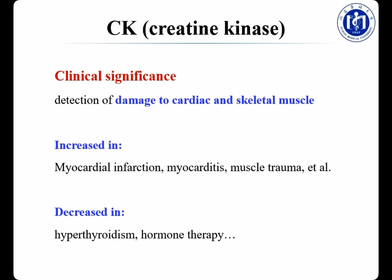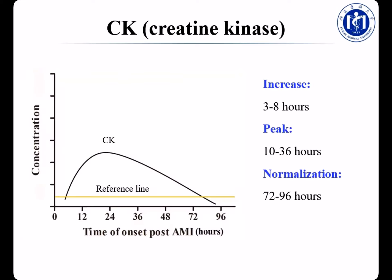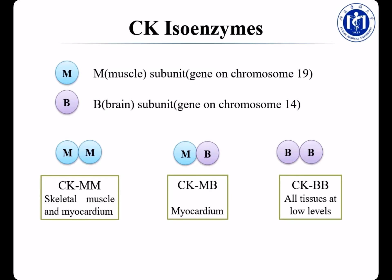You don't need to remember these specific values. These pictures show the machines used in our department to detect CK — the left one is Roche Cobas P800 using a velocity method, and the right one is from Johnson & Johnson using an enzymatic method. CK is an indicator for damage to cardiac and skeletal muscles. It is increased in myocardial infarction, myocarditis, and muscle trauma. Hypothyroidism and hormone therapy result in decreased CK. CK starts to increase 3–8 hours post AMI, reaches the peak 10–36 hours, then falls to normal range 72–96 hours after AMI.